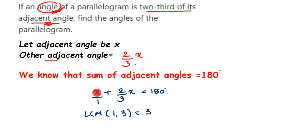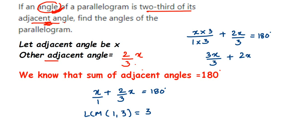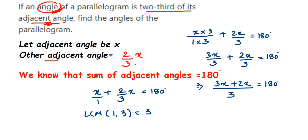So x over 1 multiplied by 3 over 3 gives 3x over 3, and the second term is already 2x over 3, so we get 3x over 3 plus 2x over 3 equals 180. Since the denominators are now the same, we add the numerators: 3x plus 2x over 3 equals 180. Transposing 3 to the other side gives 5x equals 180 multiplied by 3.